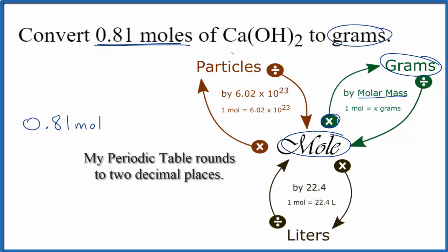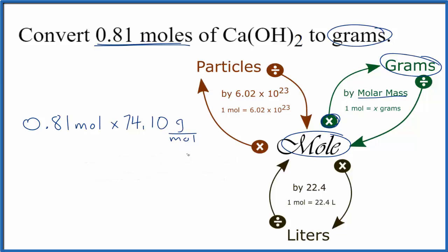When we find the molar mass, we end up with 74.10, and the units are grams per mole. Unit for molar mass, grams per mole. So now when we multiply, we have moles on the top and the bottom. They're going to cancel out, and we're left with grams, and that's what we're looking for.